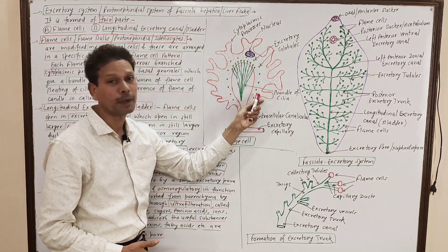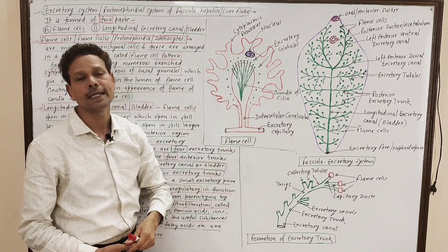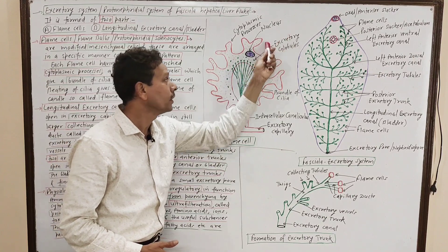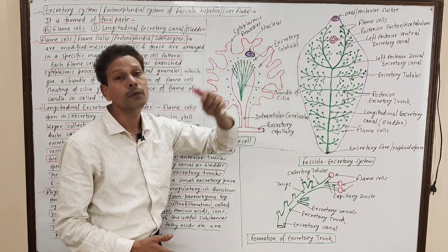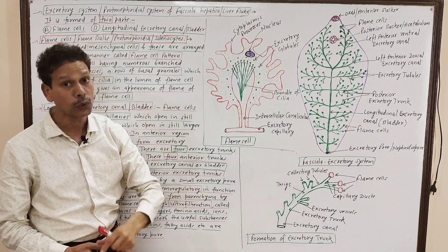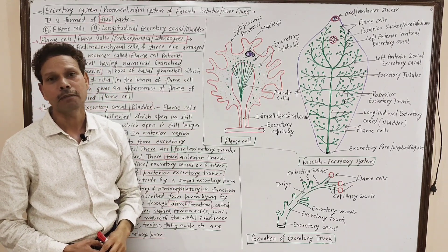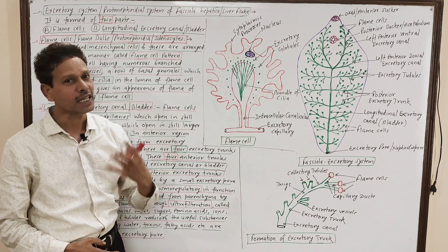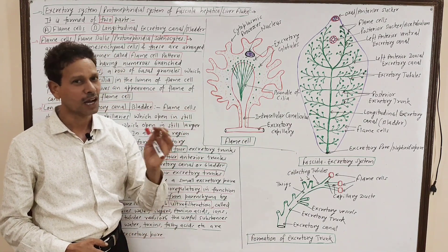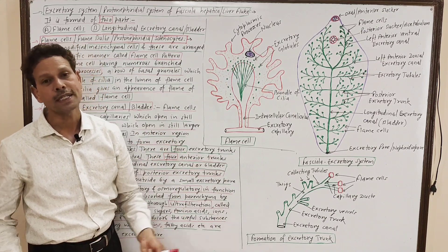In this cell cytoplasm, there is a large oval-shaped nucleus, and fine excretory globules are present. These excretory globules store the main excretory products, which are fatty acids, ammonia, CO2, toxins, etc.